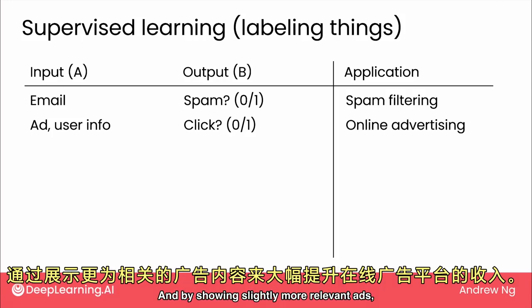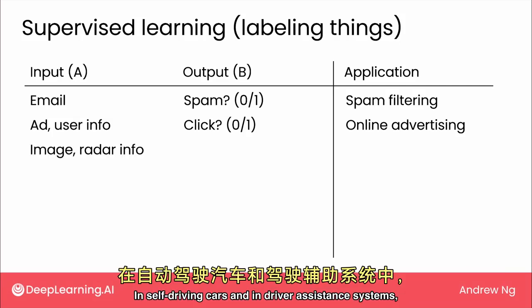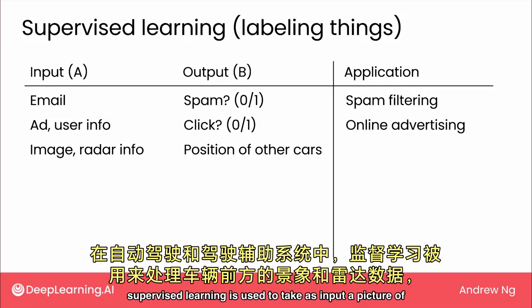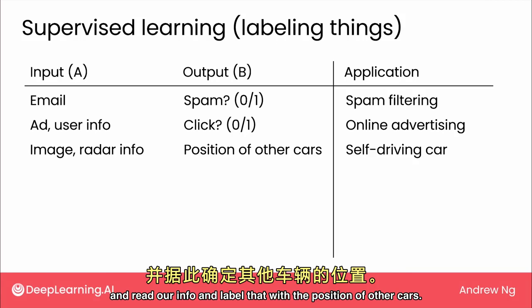And by showing slightly more relevant ads, this drives significant revenue for the online ad platforms. In self-driving cars and in driver assistance systems, supervised learning is used to take as input a picture of what's in front of your car and radar info and label that with the position of other cars.